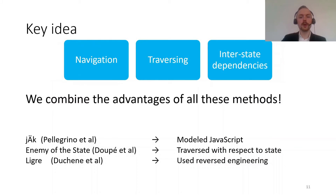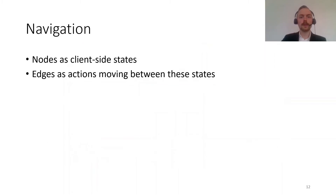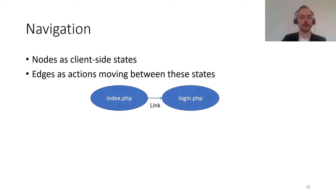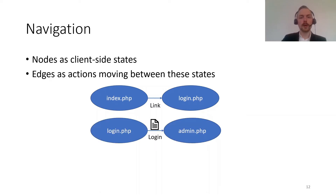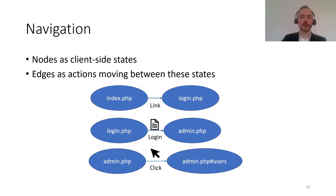Our key idea is to combine the advantages of all of these methods into one approach. To handle navigation, we treat nodes in the graph as client-side states, and the edges are the actions needed to move between these states. On the index page, for example, we might follow a simple link to the login page. But on the login page, we re-render the form, add the values, and submit it to log into the admin page. For JavaScript events, we model all JavaScript events and execute them in a real browser — actually clicking buttons or typing text to trigger onChange events.